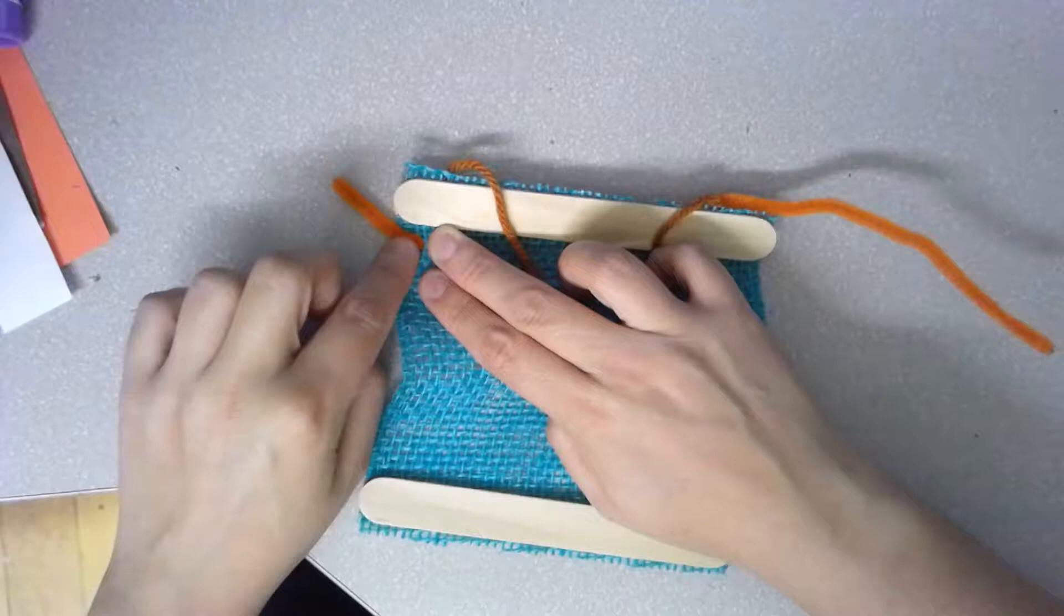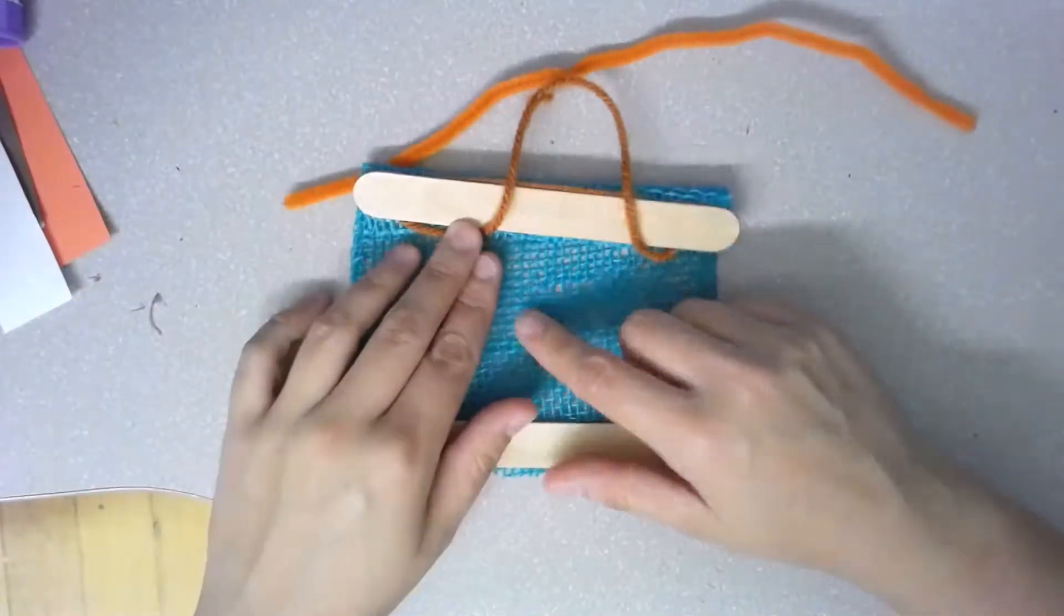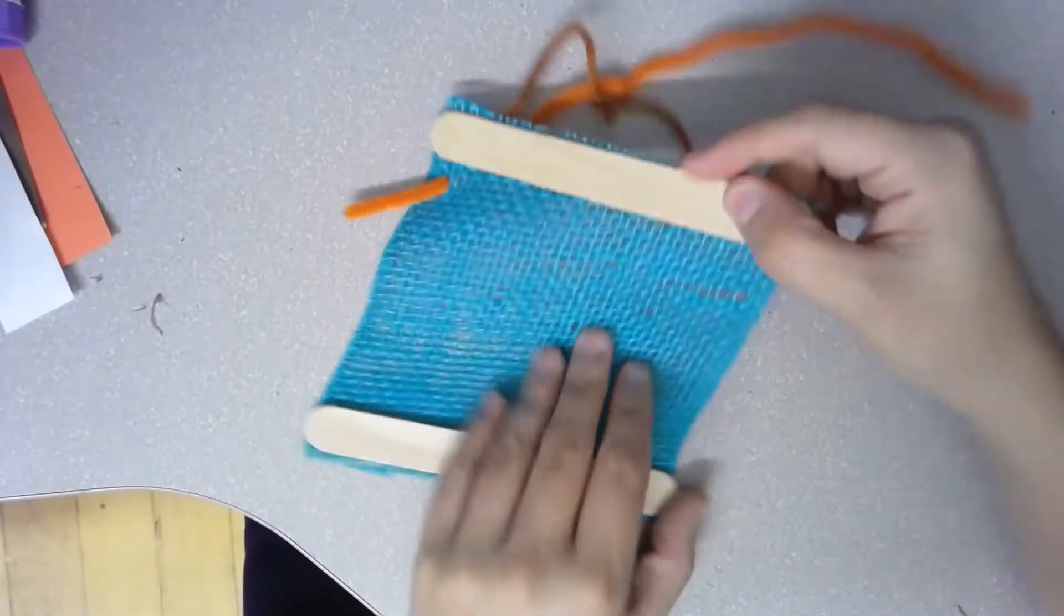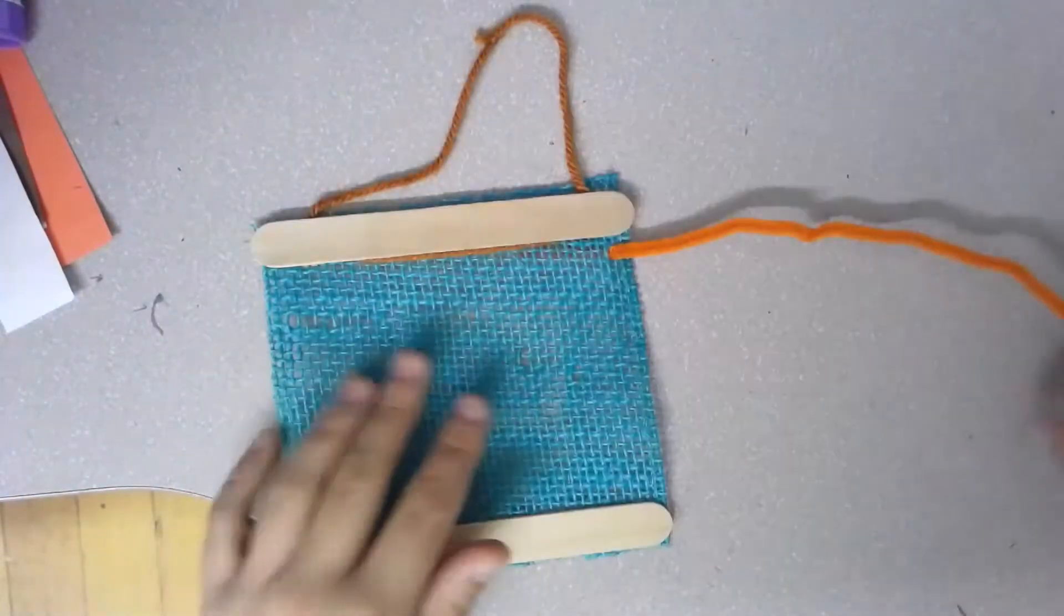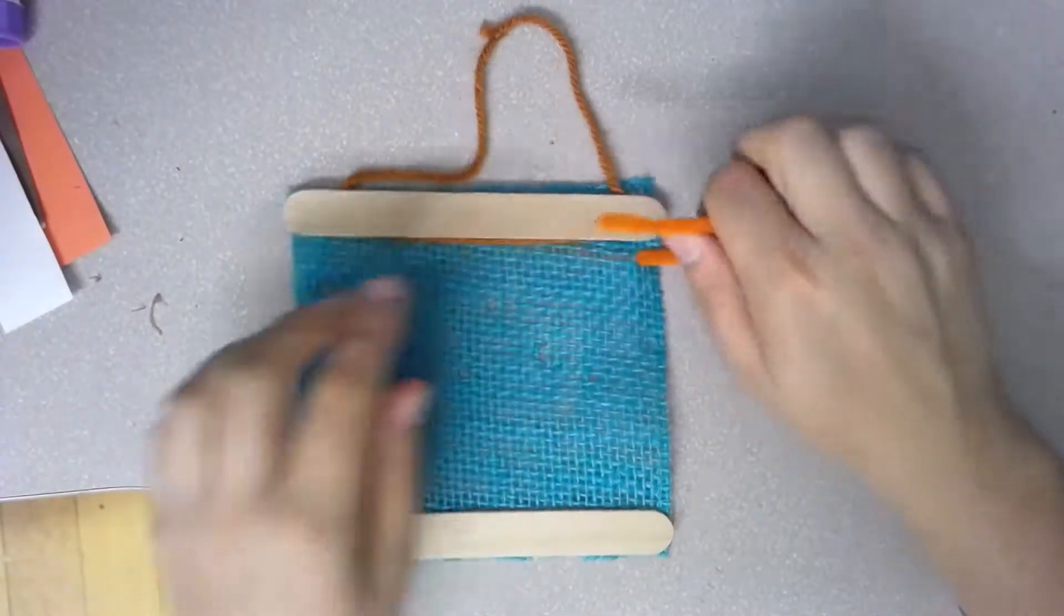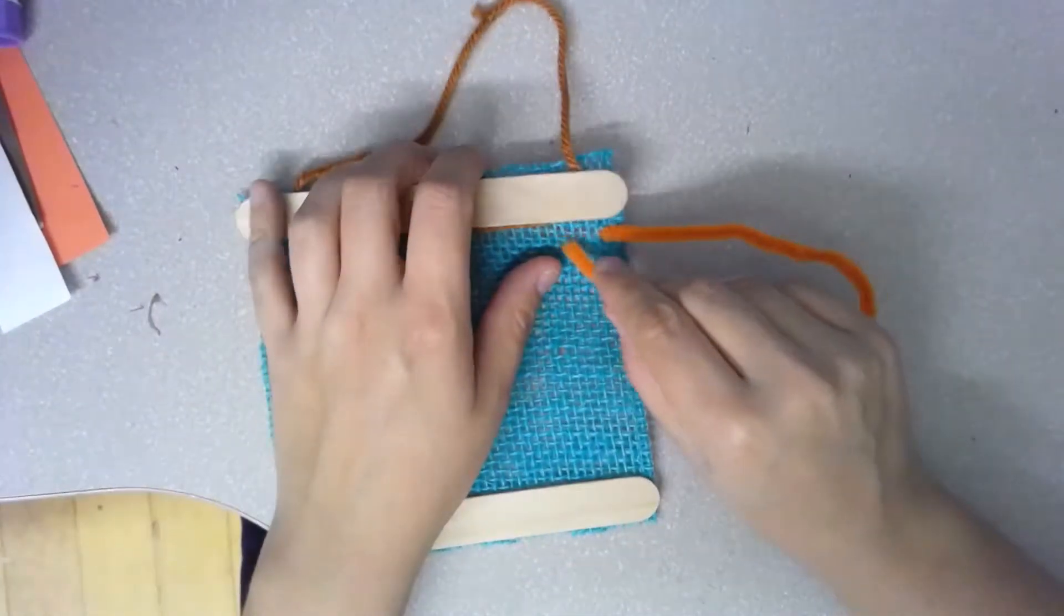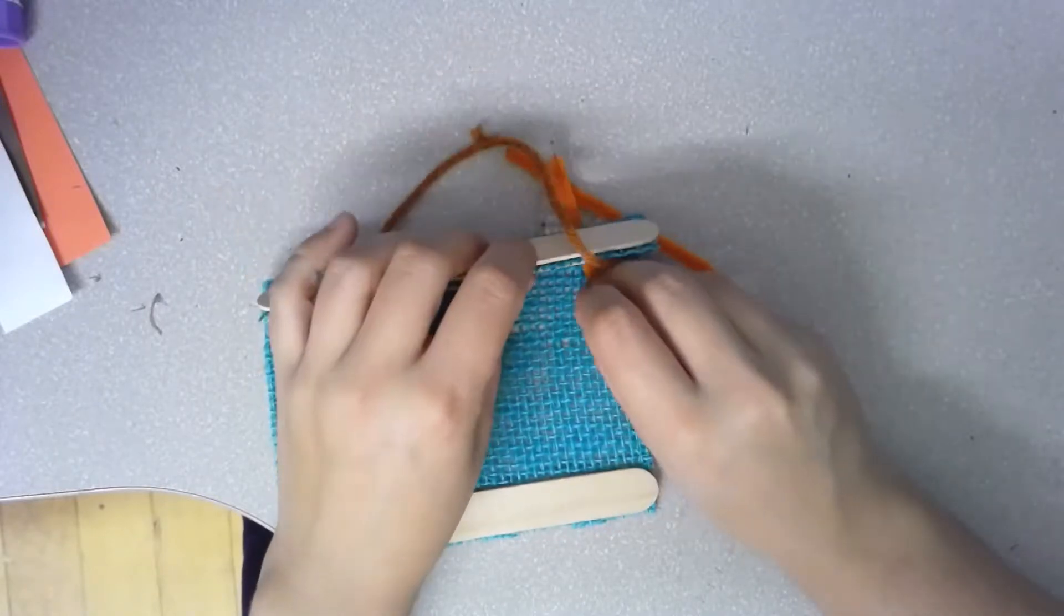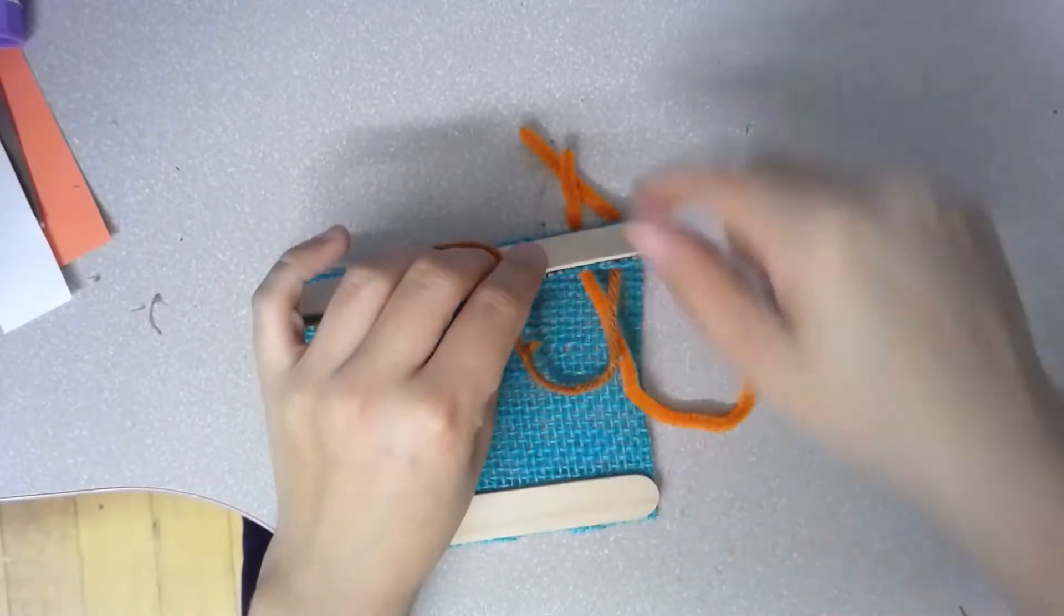Once my pipe cleaner is through to the back of your loom, you can flip it over and do that again. Find that tip, put it through a new hole. See that it's coming out the back end and pull it tight.